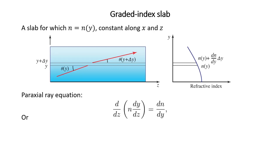We can rearrange the equation and write the second derivative of y with respect to z is equal to (1/n(y)) times the derivative of n with respect to y. We cannot solve this equation until we know the function n. We should have the explicit form of n as a function of y.